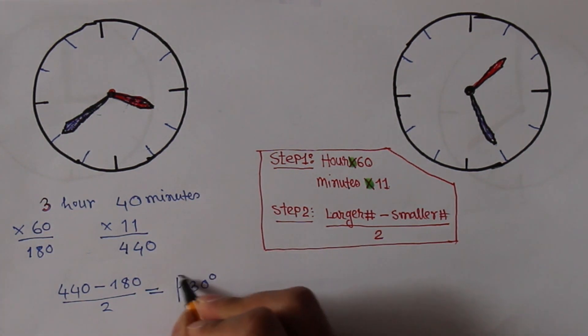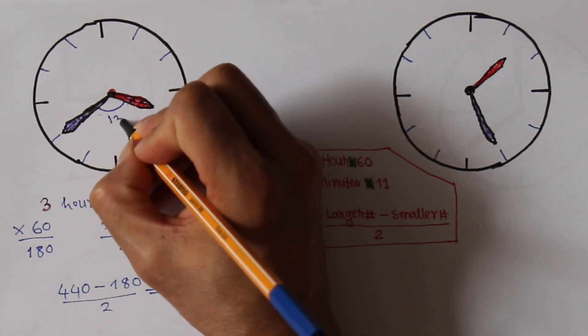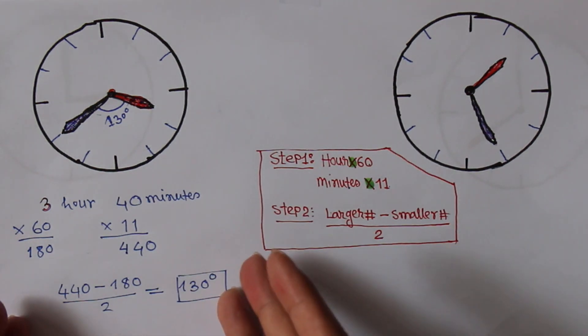If I calculate, the result is 130. Yes, this is the degree between these two arms. The answer is 130 degrees. It's very simple. You can calculate it within 10 seconds.